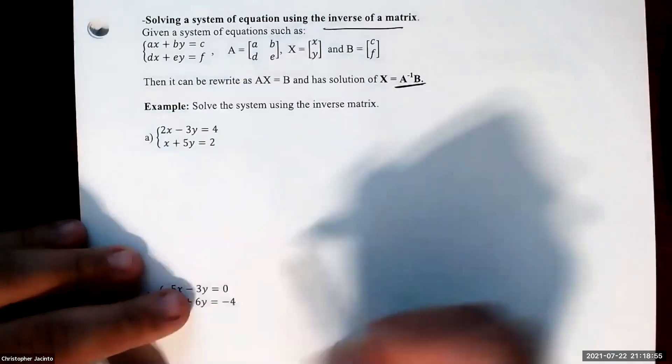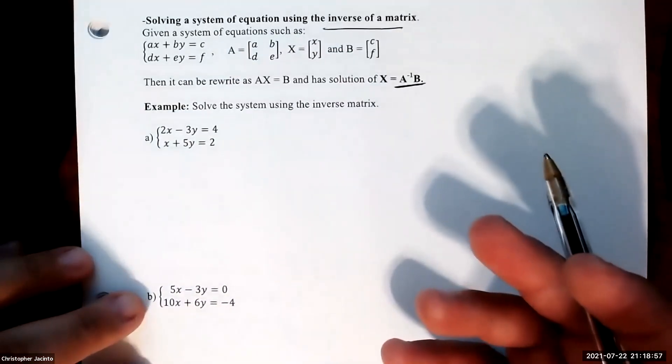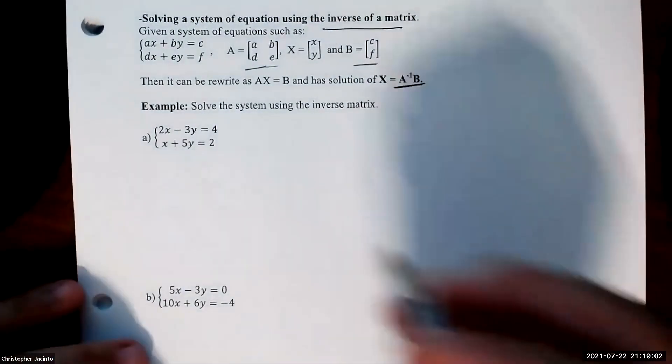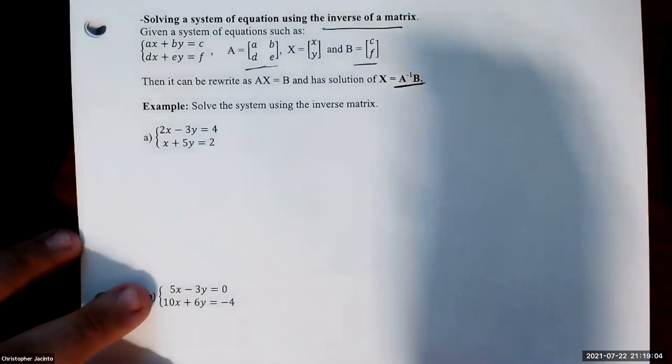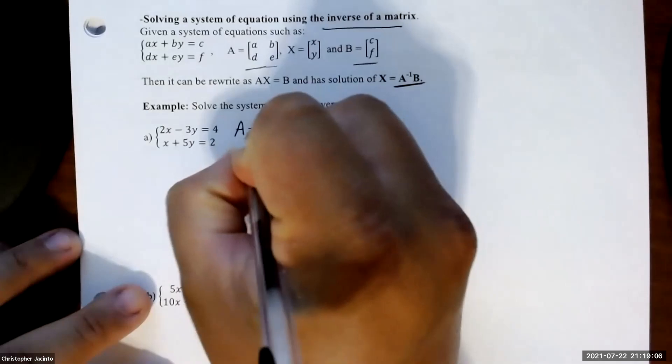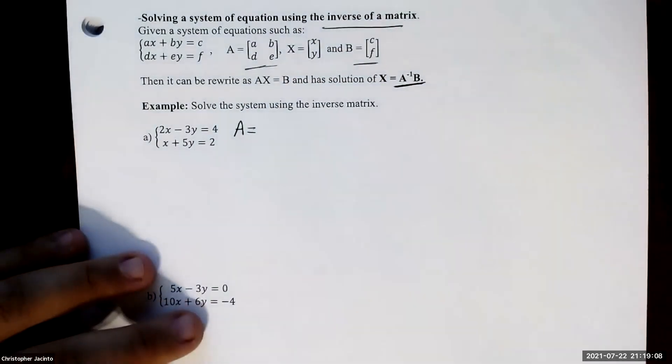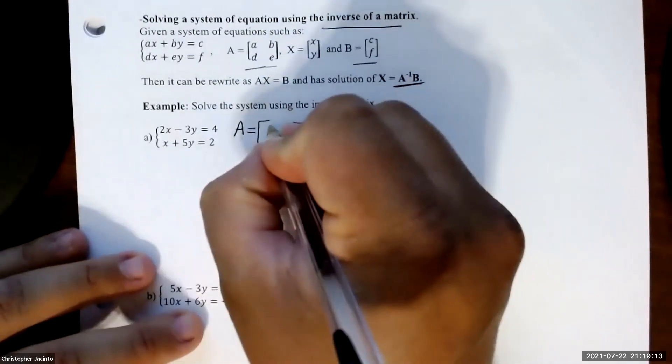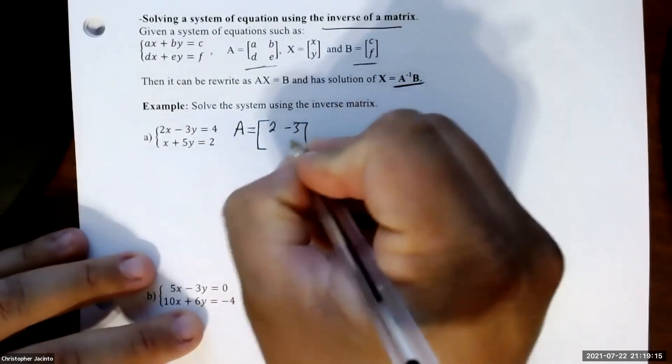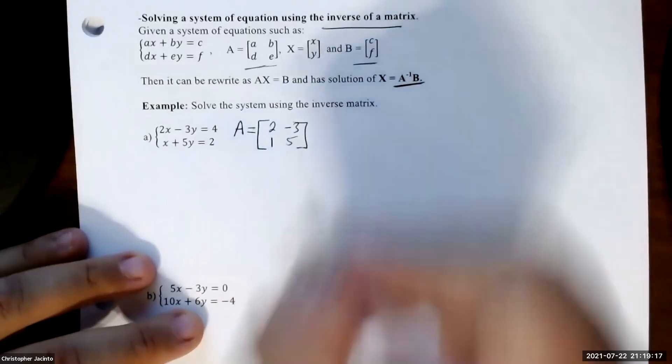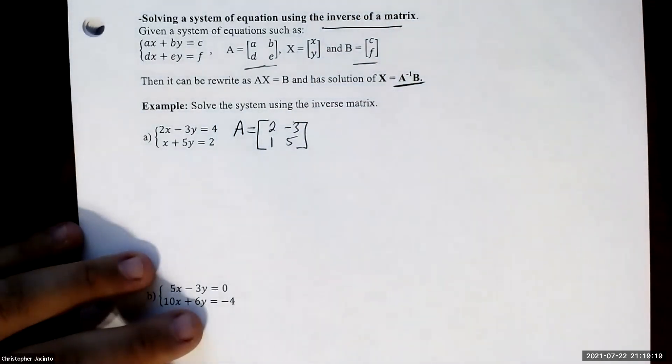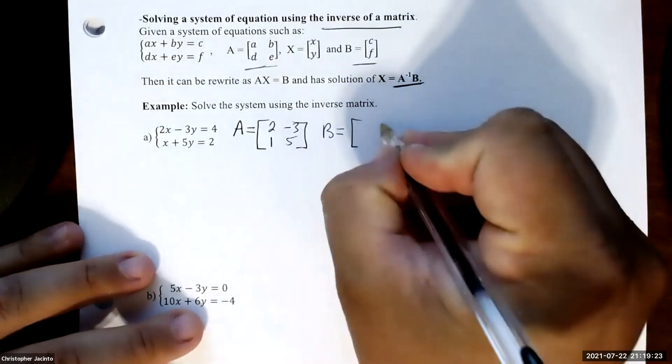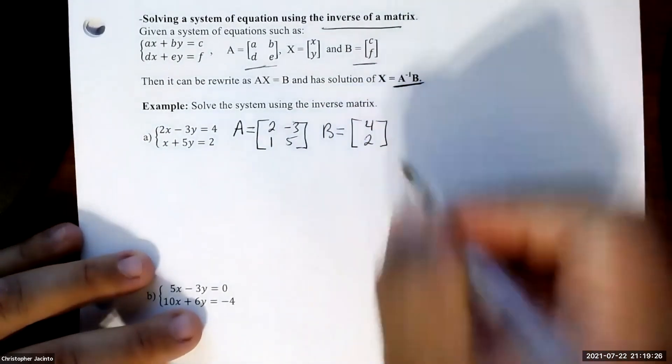After all this theory, let's try an example. Essentially all you care about is A and B, and then the inverse of it. First, find matrix A. So matrix A is just the x and y coefficients: 2, negative 3, 1, and 5.